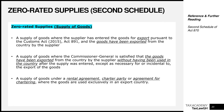The next zero-rated category is a supply of goods under a rental agreement, a charter party, or an agreement for chartering, where the goods are used exclusively in an export country. This is still related to exports — you have entered into a supply of goods arrangement involving a rental agreement, charter party, or chartering agreement, whether for outgoing vessels, ships, or aircraft, with the goods to be used exclusively outside Ghana.